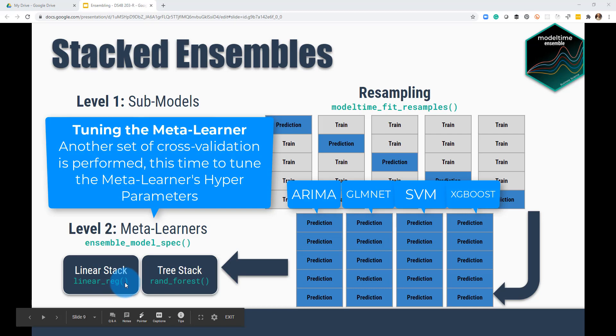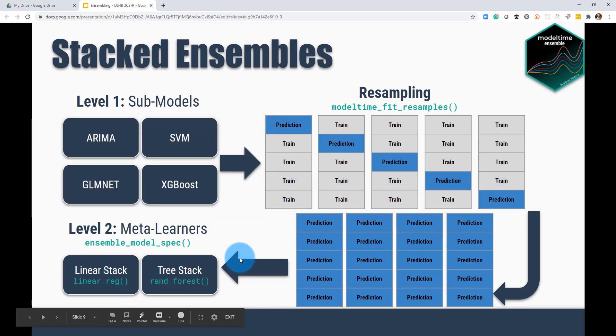So if you do a linear regression, that's a non-tunable, there's no parameters to a linear regression. But if you do a GLMnet or if you do a random forest, both of these models are modeling approaches are tunable, and you would do another set of cross validation on these. And that's how you would find out the best tuning parameters, hyper parameters for your meta learners.